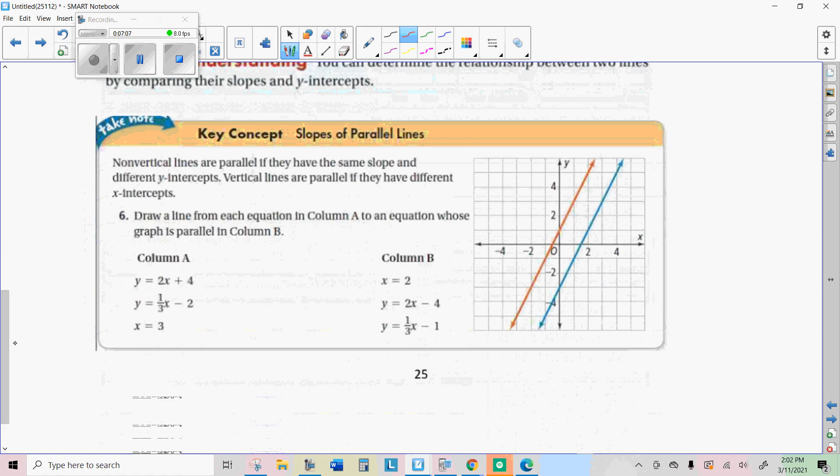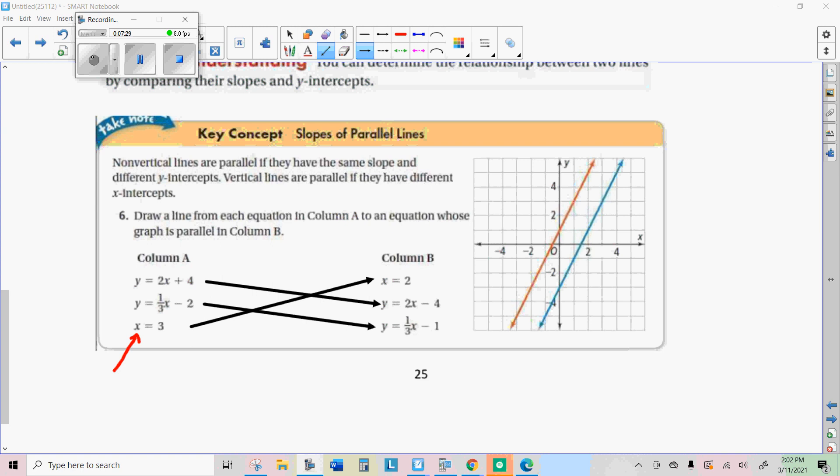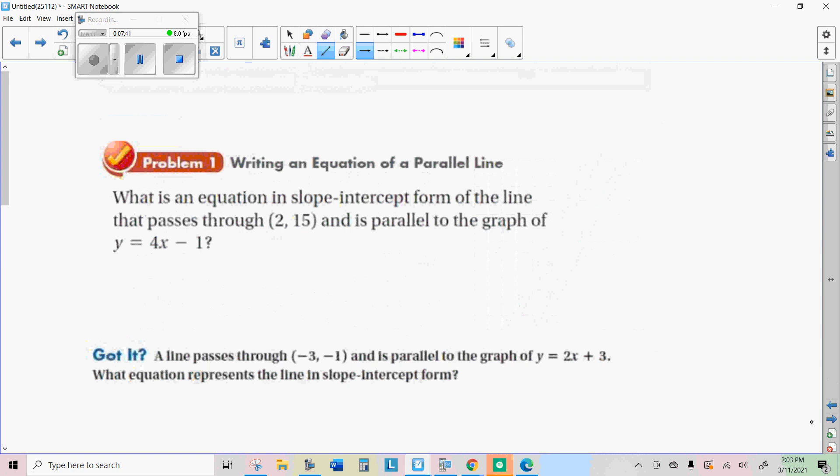The slopes of parallel lines will be parallel if they have the same slopes. And the slope is the coefficient. So match them up. Remember that an equation like this represents a vertical line. So you should have matched them up with equations that have the same coefficient. For the x equals three and x equals two, we know they're parallel because all vertical lines would be parallel.